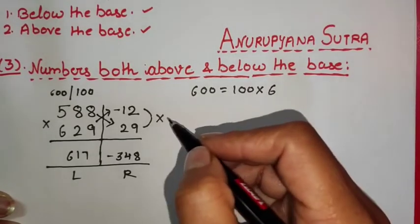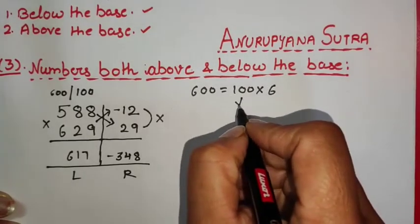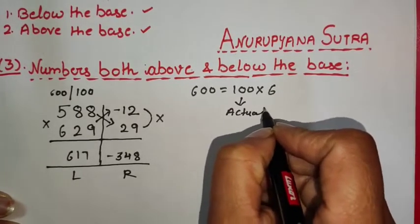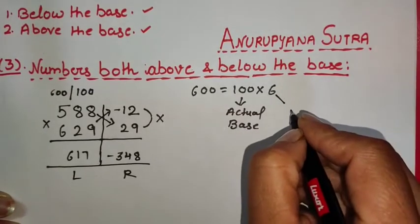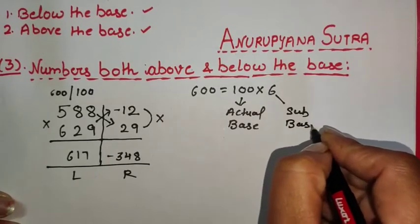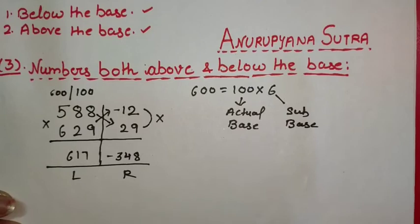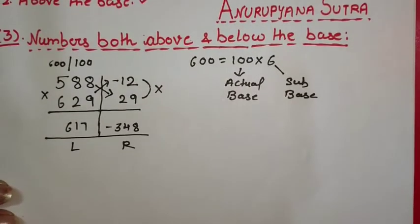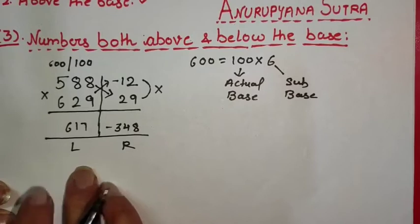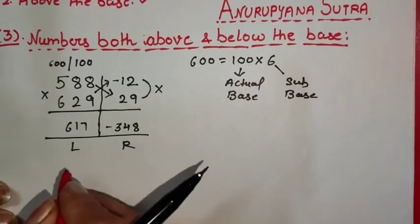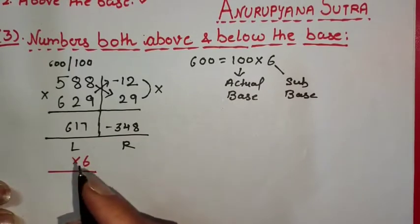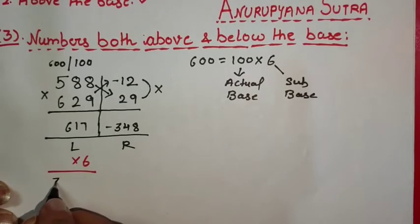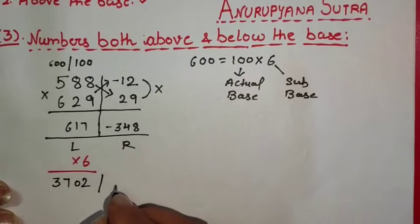Since we derived working base 600 from actual base 100 by multiplying by 6, this 6 acts as our sub-base. As discussed in the last video, we need to multiply our left-hand side answer by 6. So multiplying 617 by 6 gives us 3702 as our left-hand side answer, and the right-hand side answer remains −348.